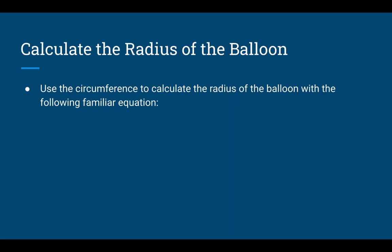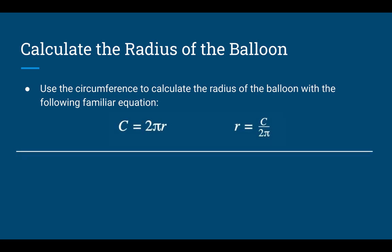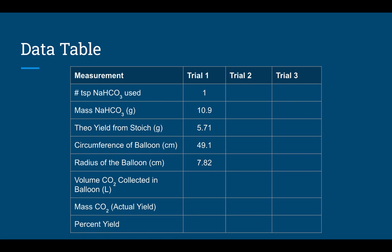To calculate the radius from circumference, we use the geometry formula: circumference = 2πr, so radius = circumference ÷ 2π. Plugging in our circumference of 49.1 cm divided by 2π, we find the radius of our balloon is 7.82 centimeters. We update the data table with this value.